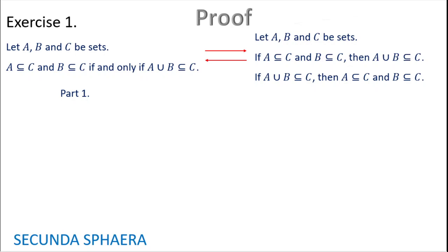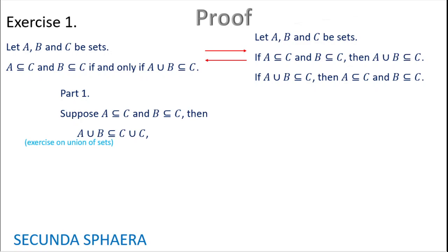For the first part, we need to prove that A⊆C and B⊆C gives us that A∪B is going to be contained in C. Suppose that A is contained in C and B is contained in C. It is possible to use exercises already solved in previous videos about union of sets. The first exercise gives that A∪B is contained in C∪C, applying union to each side. Another exercise on union of sets says that C∪C is equal to C. Using substitution, we have that A∪B is contained in C.